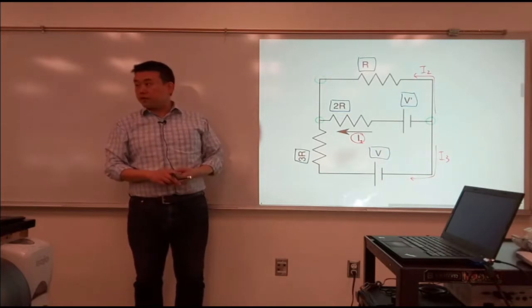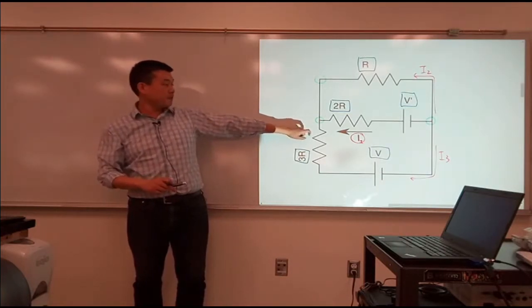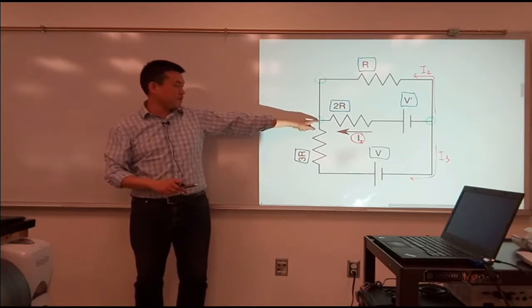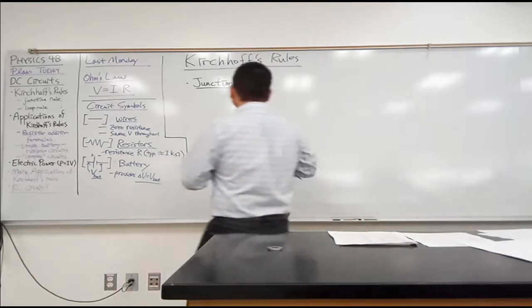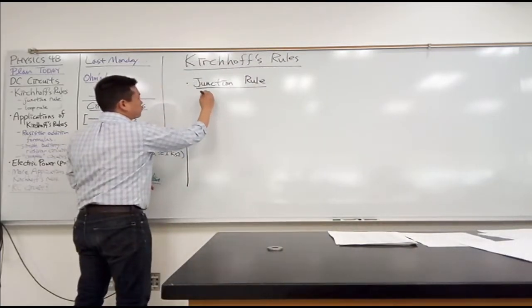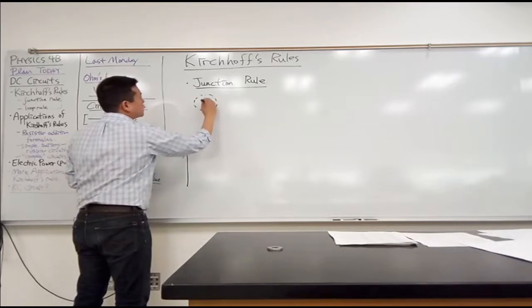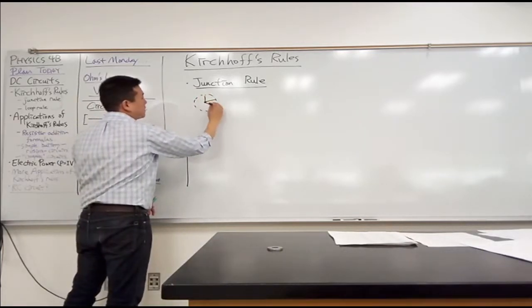So this rule involves junctions and it involves currents involved with this junction. So what junction rule says is, let's say you have a part of a circuit. Let's say you have a part of a circuit where several wires meet at this point.